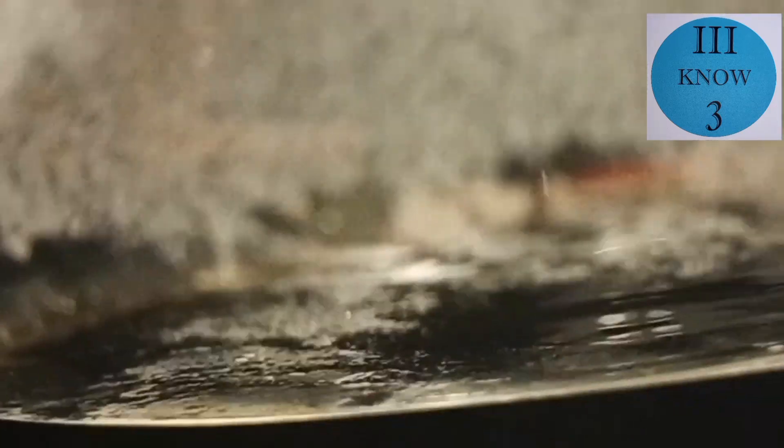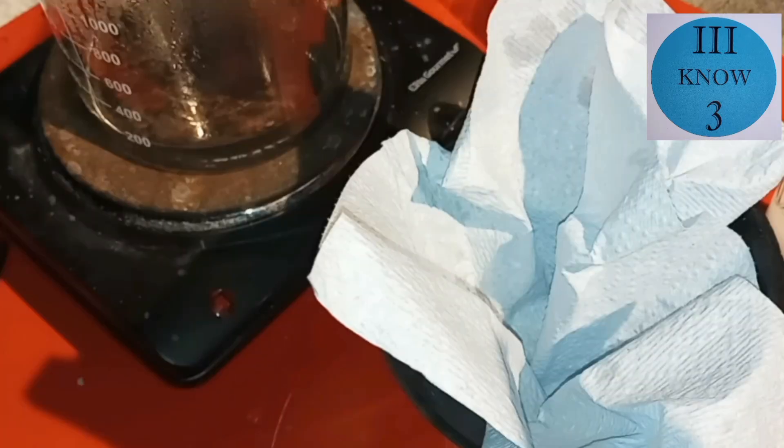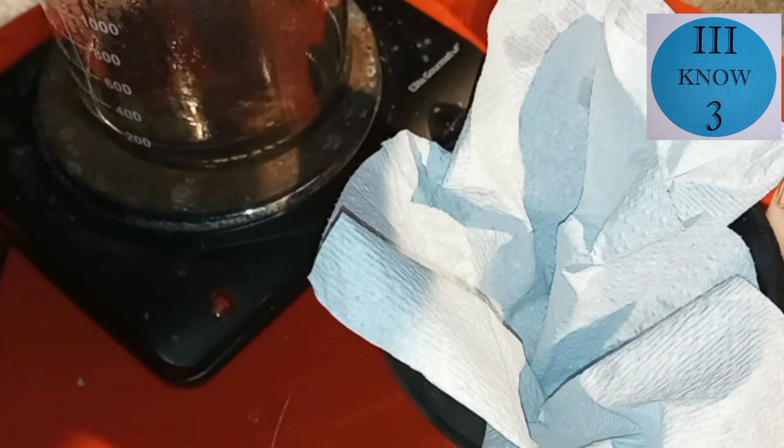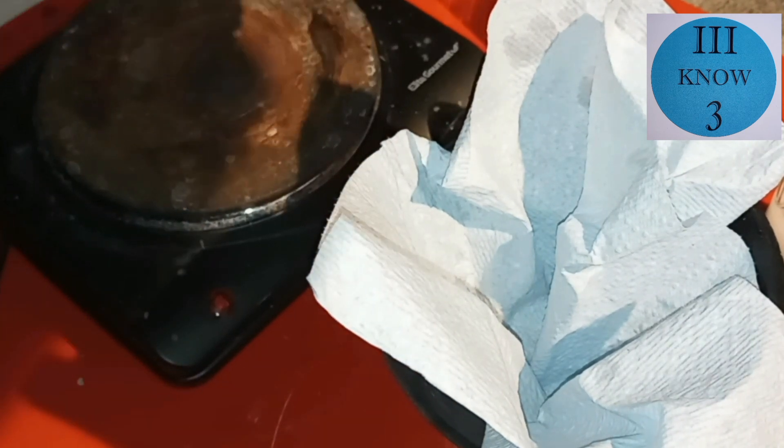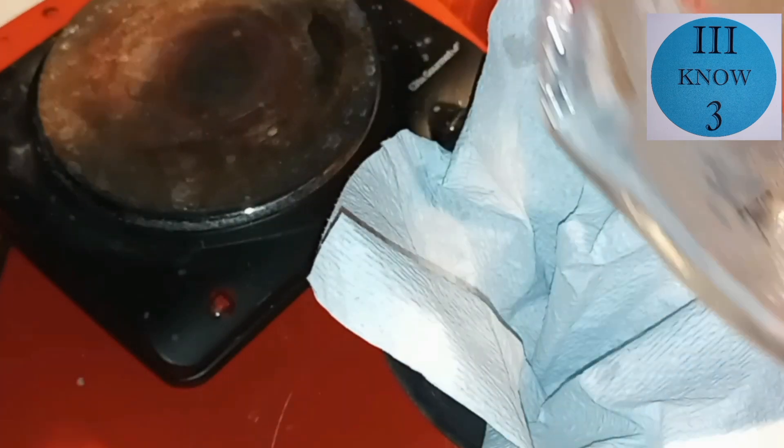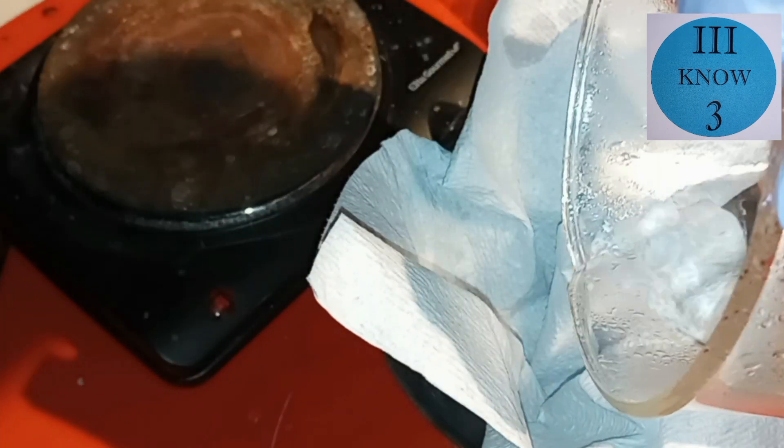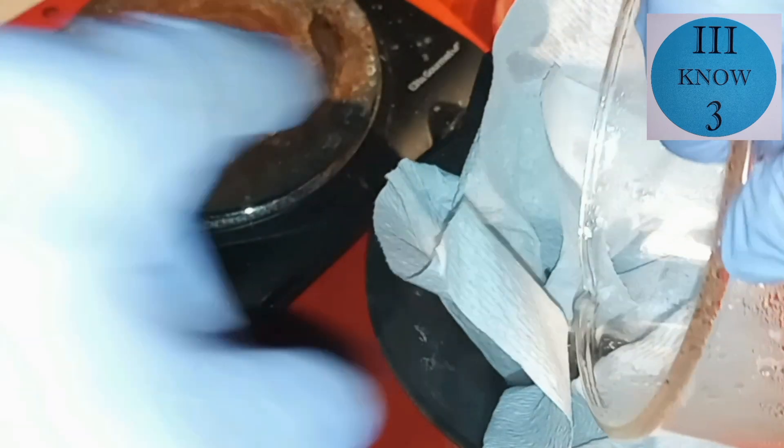So next we'll run it through a paper filter, and hopefully what we'll have in the filtrate will be some really pure stannous chloride. All of this black substance that's left over is probably lead,